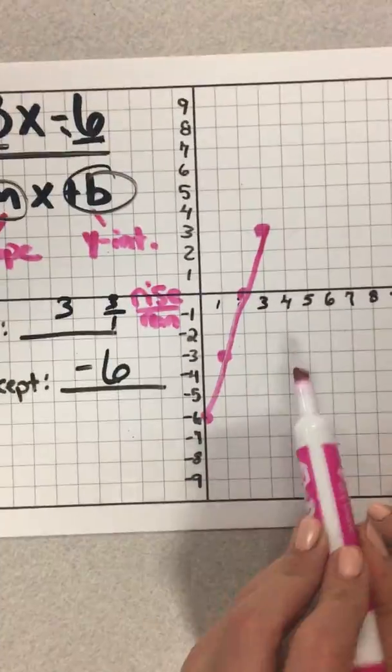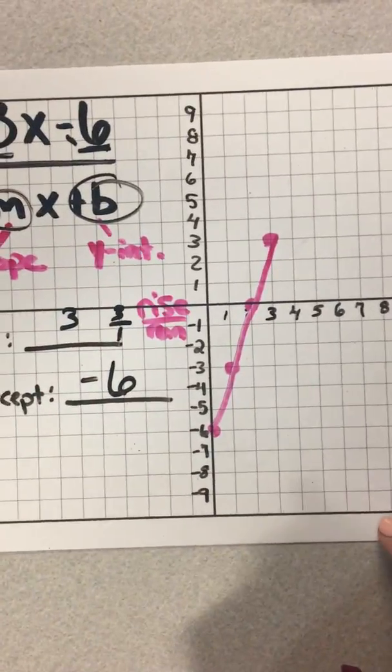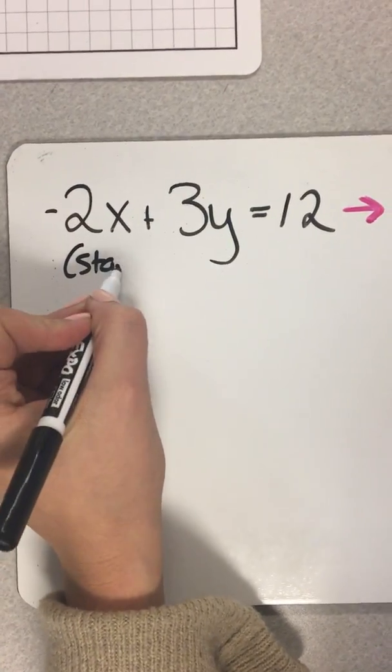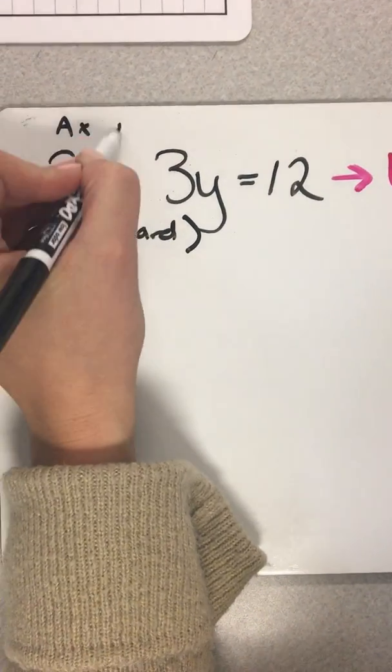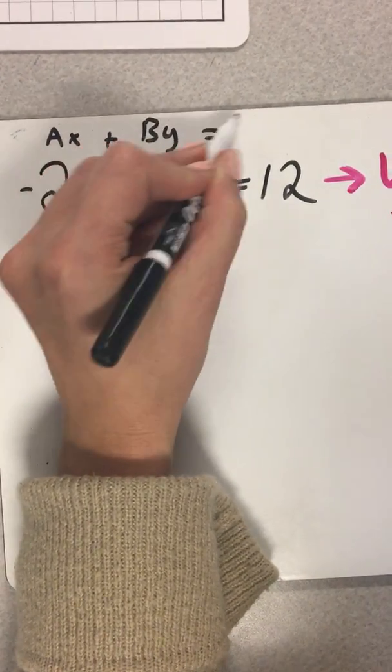So we just graphed this line from this equation. Now I'm going to show you what if we were given an equation that was in standard form. So standard form, if you remember, is ax plus by equals c.